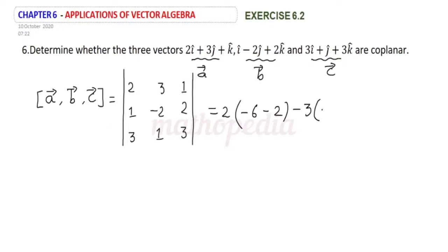Plus 1 into, leaving out the first row and last column, cross multiplying, 1 minus of minus 6. So 1 plus 6.